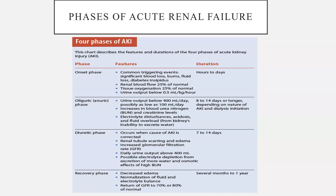The third phase is the diuretic phase, which occurs when the cause of acute renal failure is corrected. Renal tubule scarring and edema occur, glomerular filtration increases, and daily urine output increases above 400 ml. There is possible electrolyte depletion from excretion of more water and osmotic effects of high blood urea nitrogen. This phase can last for 7 to 14 days.